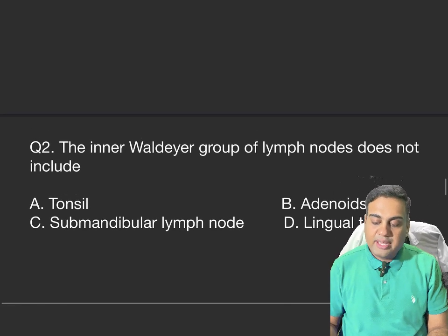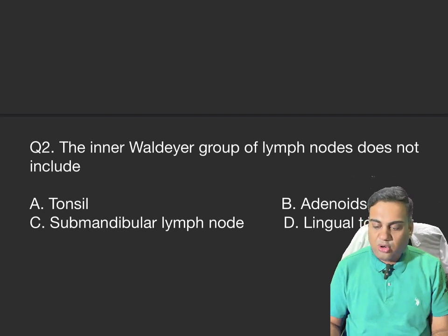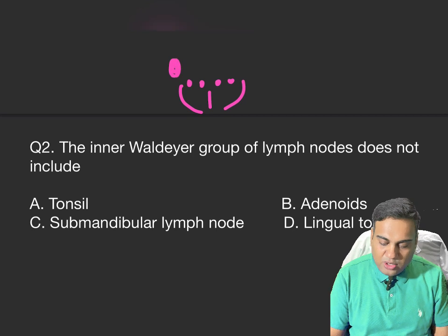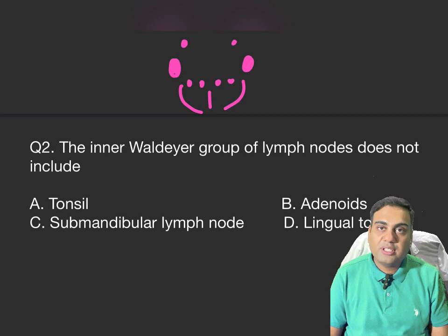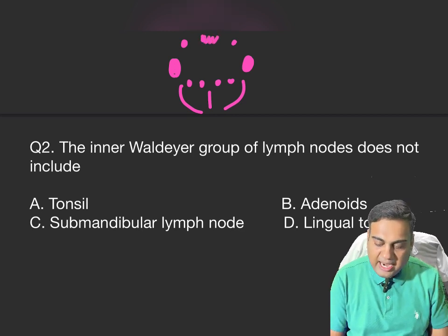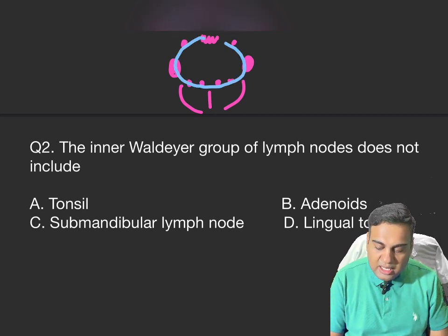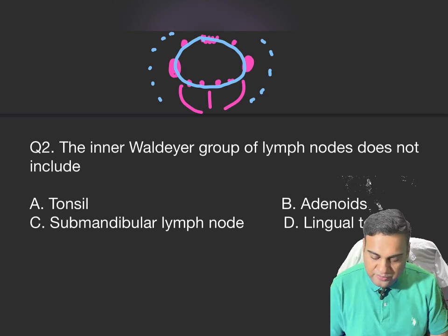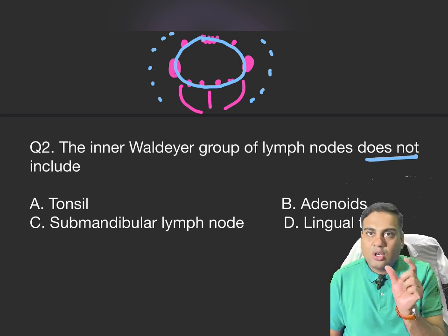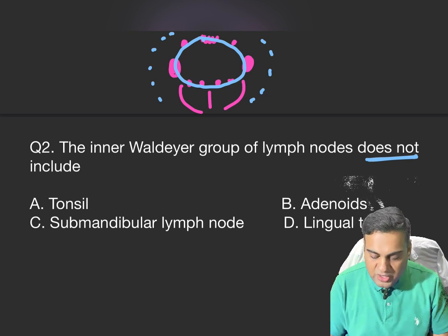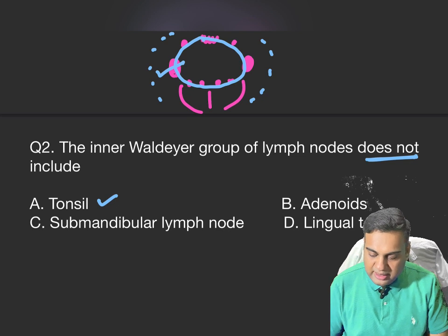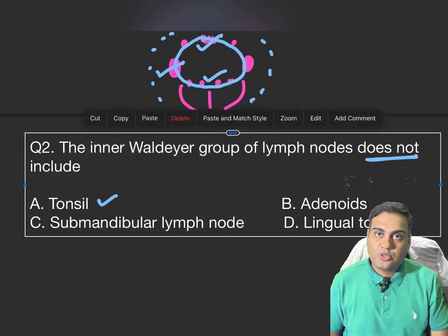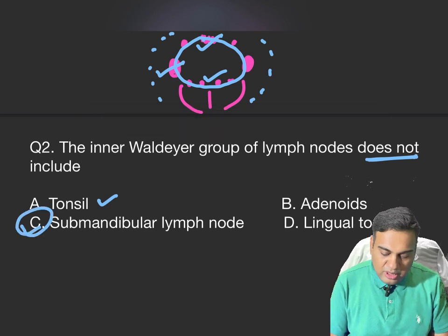Next question: which does NOT belong to Waldeyer's inner ring of lymphoid tissue? Waldeyer's ring includes lingual tonsils at the front of the tongue, palatine tonsils on the sides, tubal tonsils near the Eustachian tube, and nasopharyngeal adenoids — forming a ring-like structure. The outer ring is formed by lymph nodes around the neck. The answer is submandibular lymph nodes — they form part of the outer ring, not the inner ring.